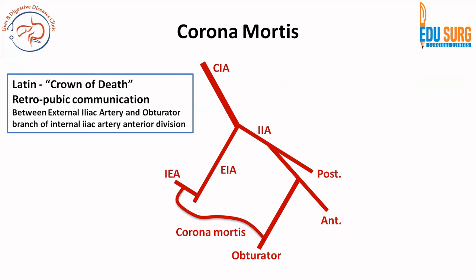Corona mortis is essentially a communication between the external and internal iliac artery through the obturator branch. The obturator artery is a branch of the anterior division of the internal iliac artery, and the inferior epigastric artery is a branch of the external iliac artery. Sometimes there can be a large communication between the inferior epigastric artery and obturator artery through the anterior or posterior division of obturator vessels, or through accessory obturator vessels. This is clinically important because this communication along the superior surface of the pubic ramus can cause massive bleeding during femoral hernia repair or mesh placement if the vessel is not recognized. It can be an artery or a vein.